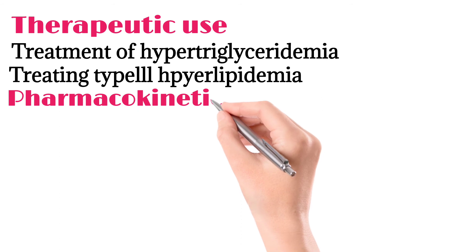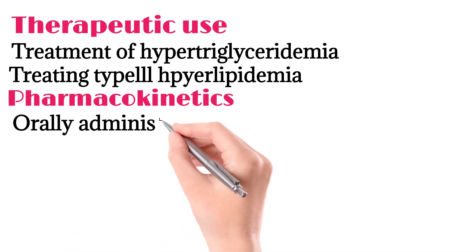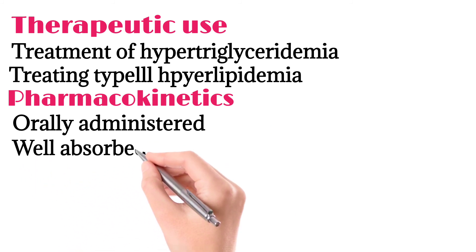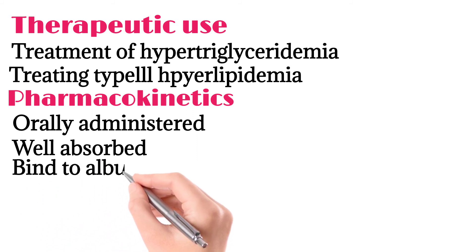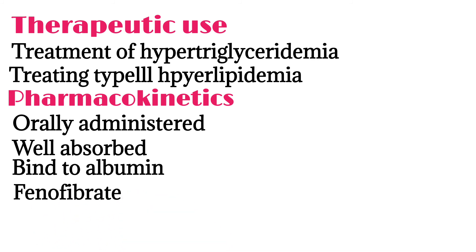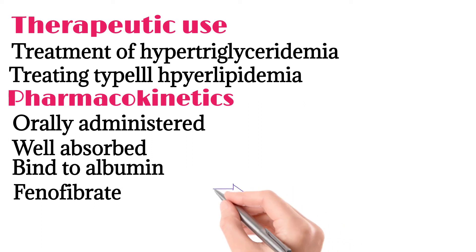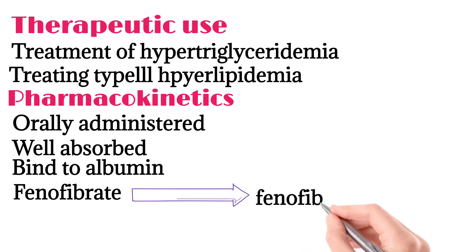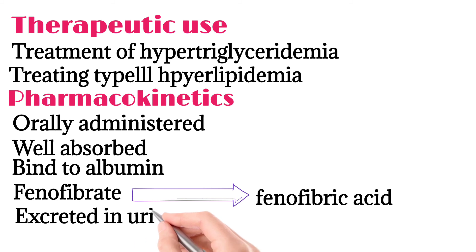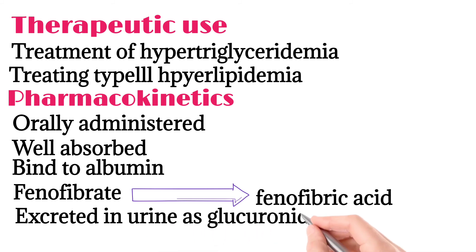Pharmacokinetics of fibrates: they are administered orally because they are well absorbed and well distributed, and they bind to albumin. Fenofibrate is a prodrug — it is in inactive form and when administered in the body, it is converted to its active form, fenofibric acid. These drugs are excreted by the kidney in urine as glucuronide conjugates.